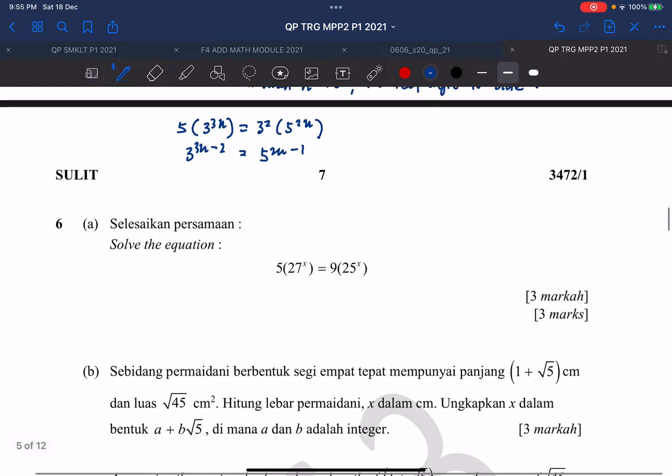So in this case, my base is no longer the same, so I must put logarithm. So to put logarithms, I will suggest to put log 10. So I will put log 10 on the left-hand side, 3, 3x minus 2 equals to 2x minus 1, log 10, 5.